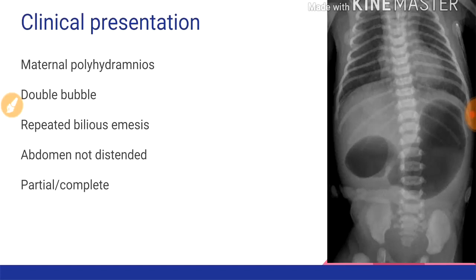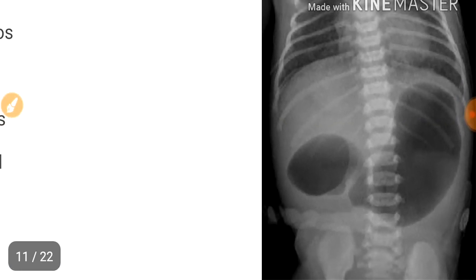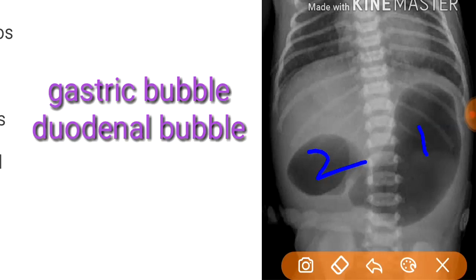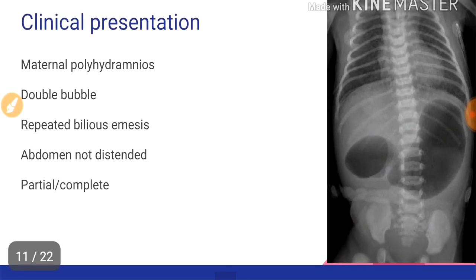Duodenal obstruction can present antenatally as maternal polyhydramnios. This is the classical double bubble appearance of duodenal obstruction on an abdominal X-ray of the neonate — this appearance can also be seen on prenatal ultrasonography. Once the child is born, the clinical presentation is repeated bilious emesis. The severity of symptoms depends on whether the obstruction is partial or complete.